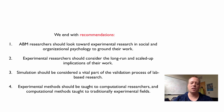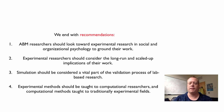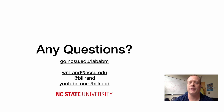To end with a couple of recommendations: ABM researchers should look toward experimental research in social and organizational psychology to ground their work. Experimental researchers, on the other hand, should consider what the long-run and scaled-up implications of their work are. We feel that simulation should be considered a vital part of the validation process, and vice versa — if you want to prove your agent-based model is valid, looking for lab experiments to back up results is one way to do that. Ideally, we'd like to see a merger of these two methodological fields: experimental methods taught to computational researchers and computational methods taught to traditional experimental fields. The preprint is available at go.ncsu.edu/lababm, and you can email me at wmrand@ncsu.edu. Thank you.